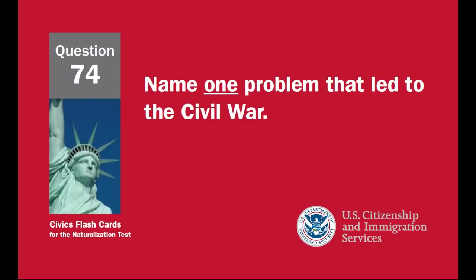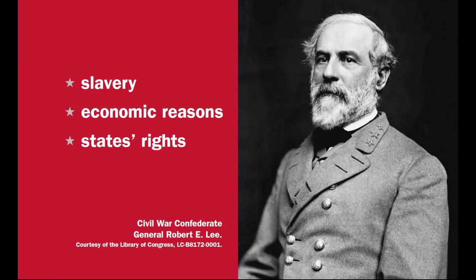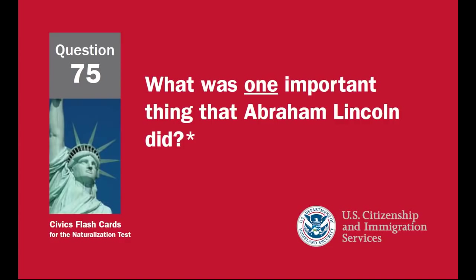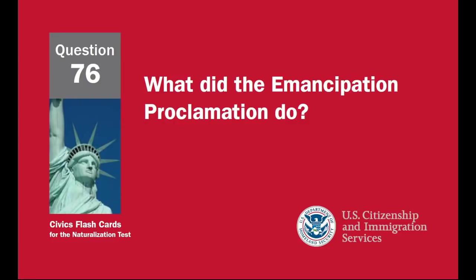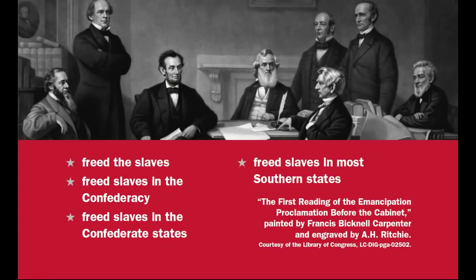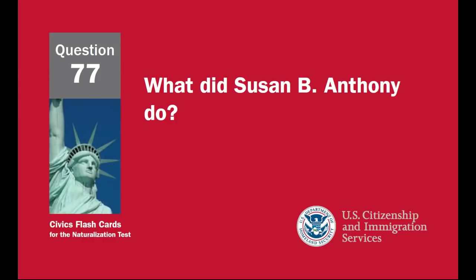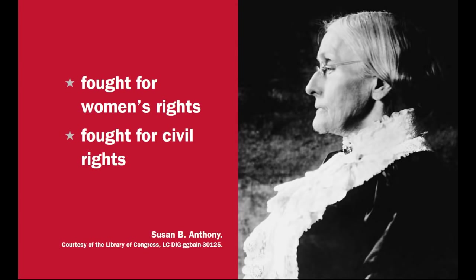Name one problem that led to the Civil War: slavery, economic reasons, states' rights. What was one important thing that Abraham Lincoln did? Freed the slaves — Emancipation Proclamation — saved or preserved the Union, led the United States during the Civil War. What did the Emancipation Proclamation do? Freed the slaves, freed slaves in the Confederacy, freed slaves in the Confederate States, freed slaves in most Southern states. What did Susan B. Anthony do? Fought for women's rights and civil rights.